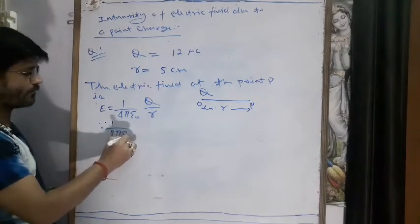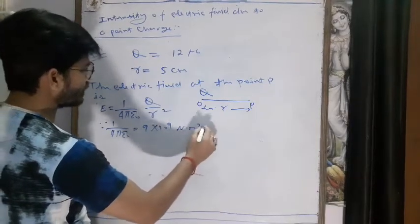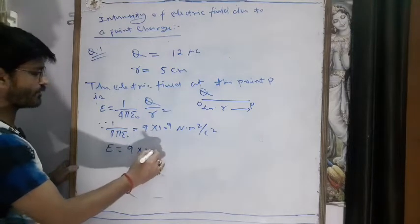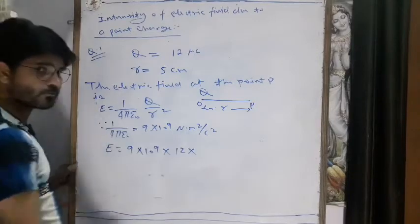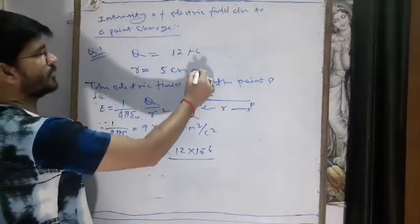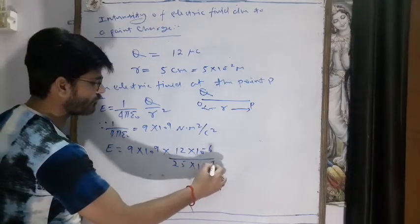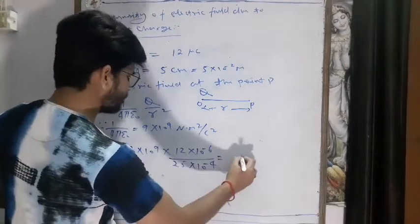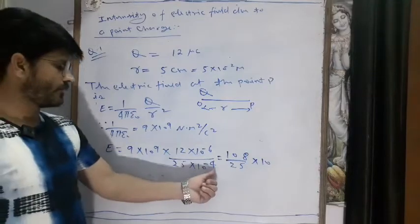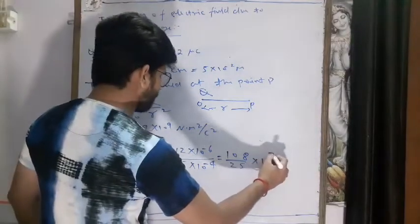We know that the value of 1 upon 4π epsilon naught is 9 × 10⁹ Newton meter squared per coulomb squared. So E equals 9 × 10⁹, Q is 12 microcoulombs which is 12 × 10⁻⁶ coulombs, and R is 5 cm which equals 5 × 10⁻² meters, so R squared is 25 × 10⁻⁴. This gives 108 divided by 25, times 10 to the power 7 — collecting powers: 9 plus 4 gives 13, minus 6 gives 7, so 10⁷. The result is 4.32 × 10⁷.